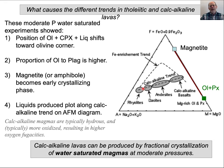What do we notice about calc-alkaline magmas? They have a lot of water in them — that's one thing. Mid-ocean ridge basalts tend to have pretty low water content. But when we are able to infer what the original water contents were in arc magmas, those basalts have a lot of water in them.